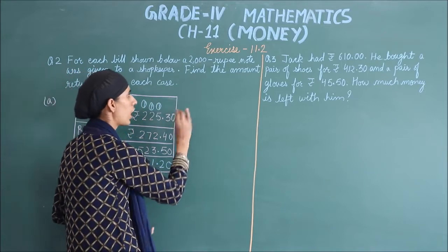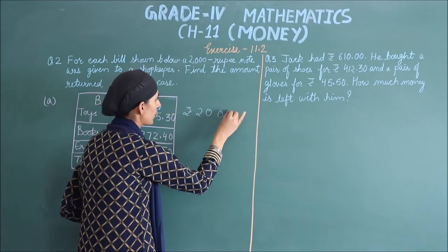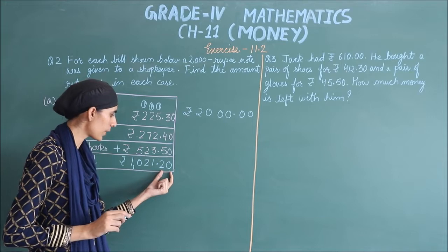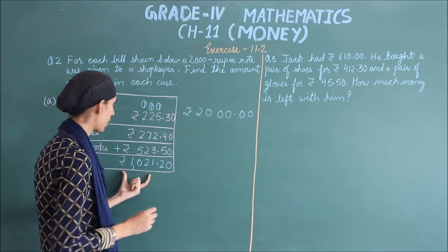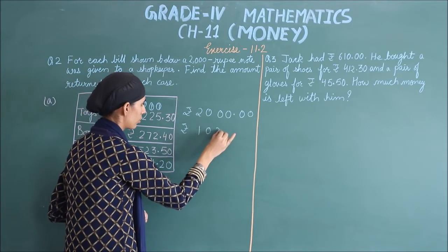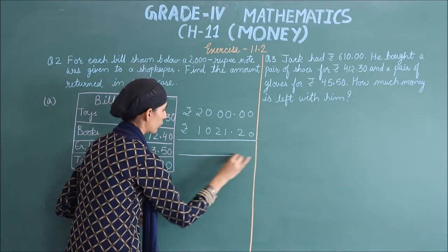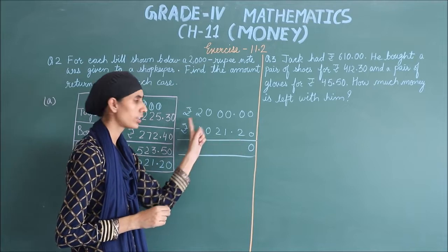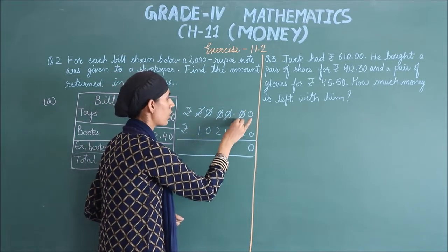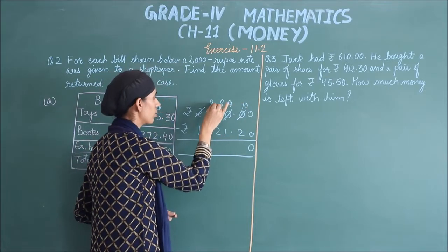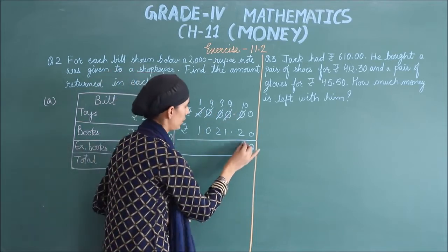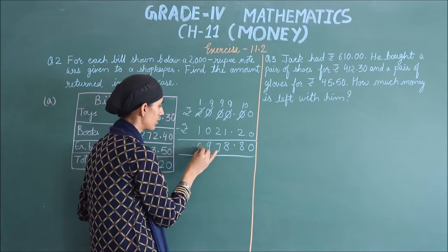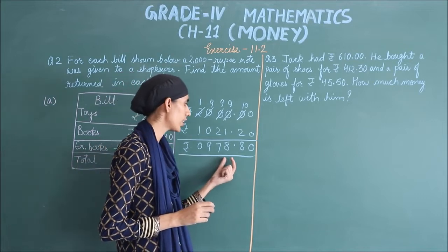You gave ₹2,000. To find the return money, subtract the bill from the amount given. Write 2000.00 and subtract 1021.20. Starting from the right: 0 minus 0 is 0. Next digit can't subtract, so borrow — it becomes 10, and remaining digits become 9s. 10 minus 2 is 8, 9 minus 1 is 8, 9 minus 2 is 7, 9 minus 0 is 9, 1 minus 1 is 0. So the shopkeeper will return ₹978.80.